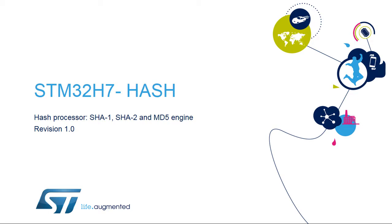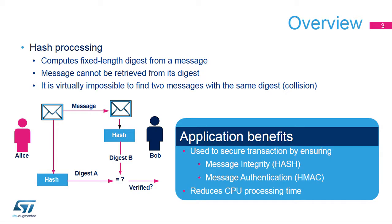Hello, and welcome to this presentation of the STM32H7 hash processor. The hash peripheral is in charge of efficient computing of the message digest. A digest is a fixed-length value computed from an input message. A digest is unique — it is virtually impossible to find two messages with the same digest. The original message cannot be retrieved from its digest. Hash digests and hash-based message authentication code, or HMAC, are widely used in communication since they are used to guarantee the integrity and authentication of a transfer.